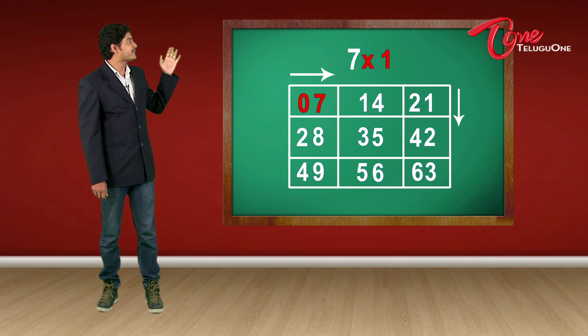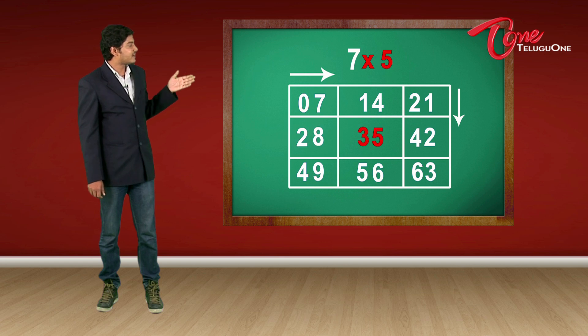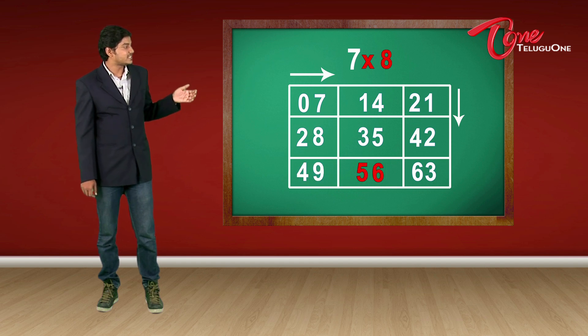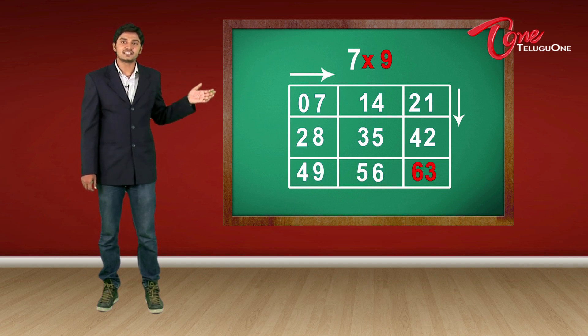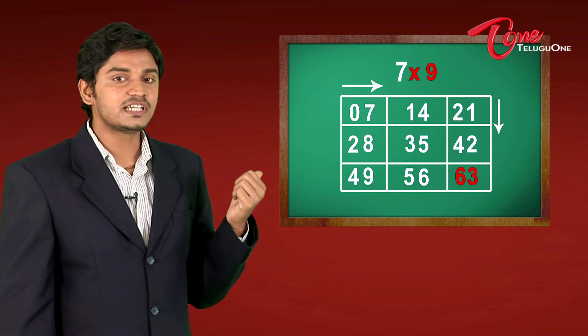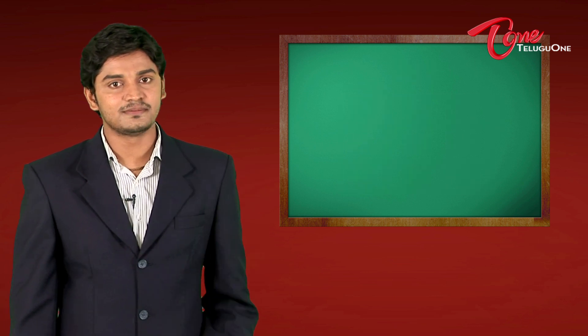7 times 1, 07. 7 times 2 is 14. 7 times 3, 21. 7 times 4, 28. 7 times 5, 35. 7 times 6, 42. 7 times 7, 49. 7 times 8, 56. And 7 times 9, 63. So, this way, I cannot memorize tables, but I can learn using a small pattern on my 7 table.